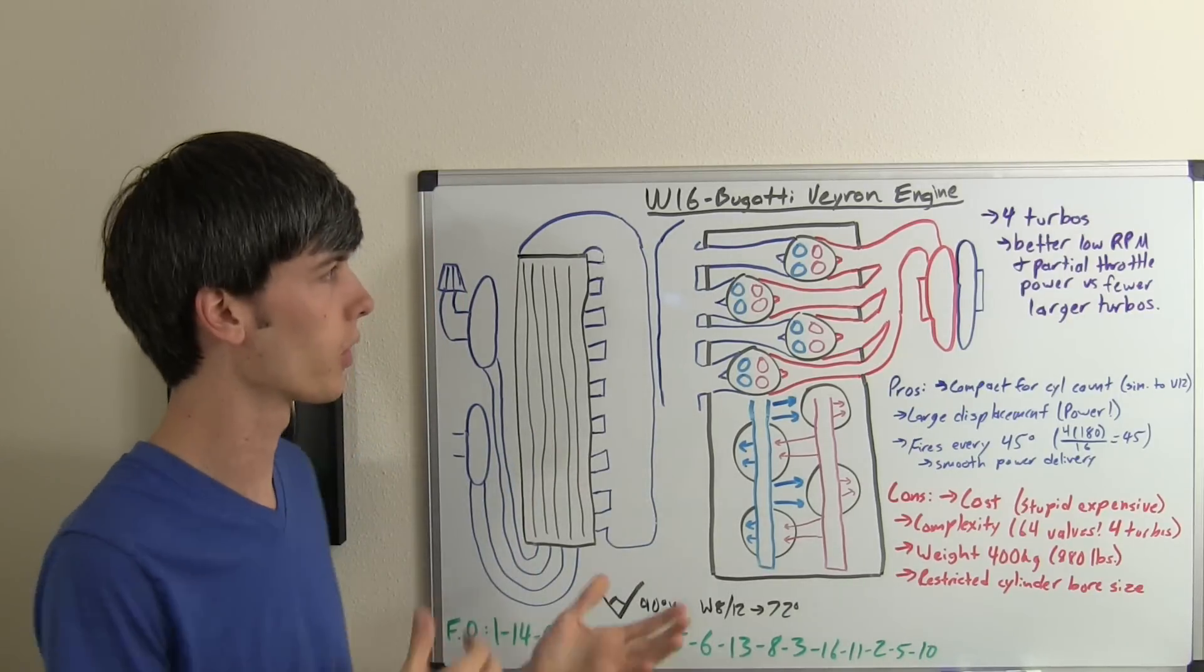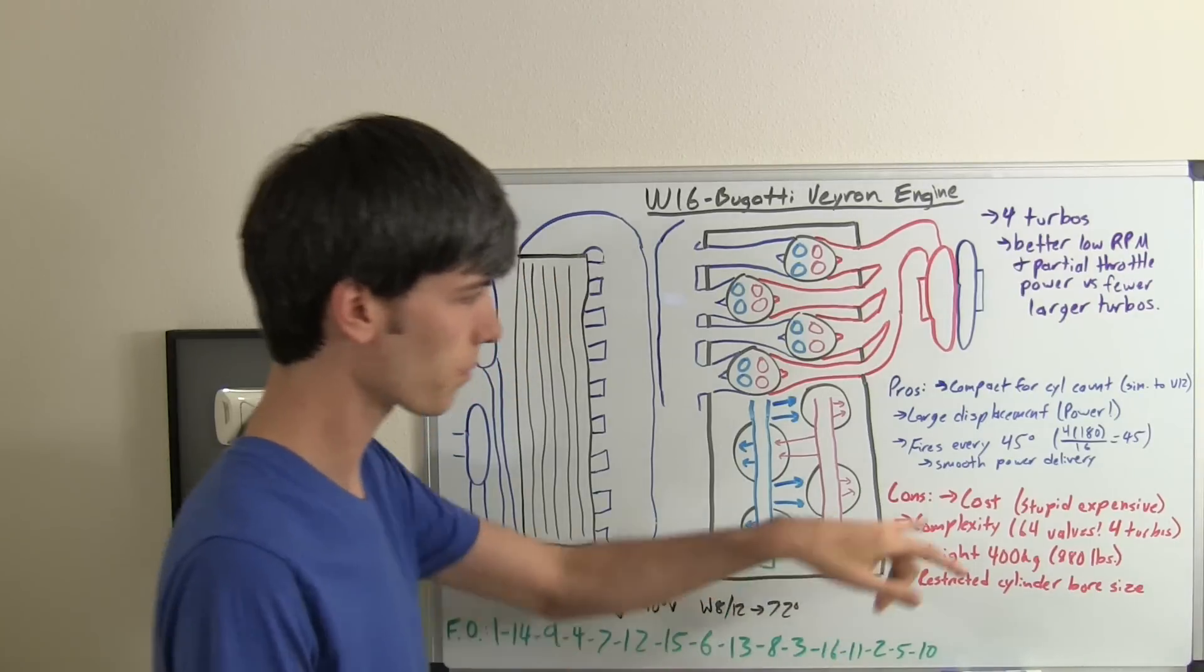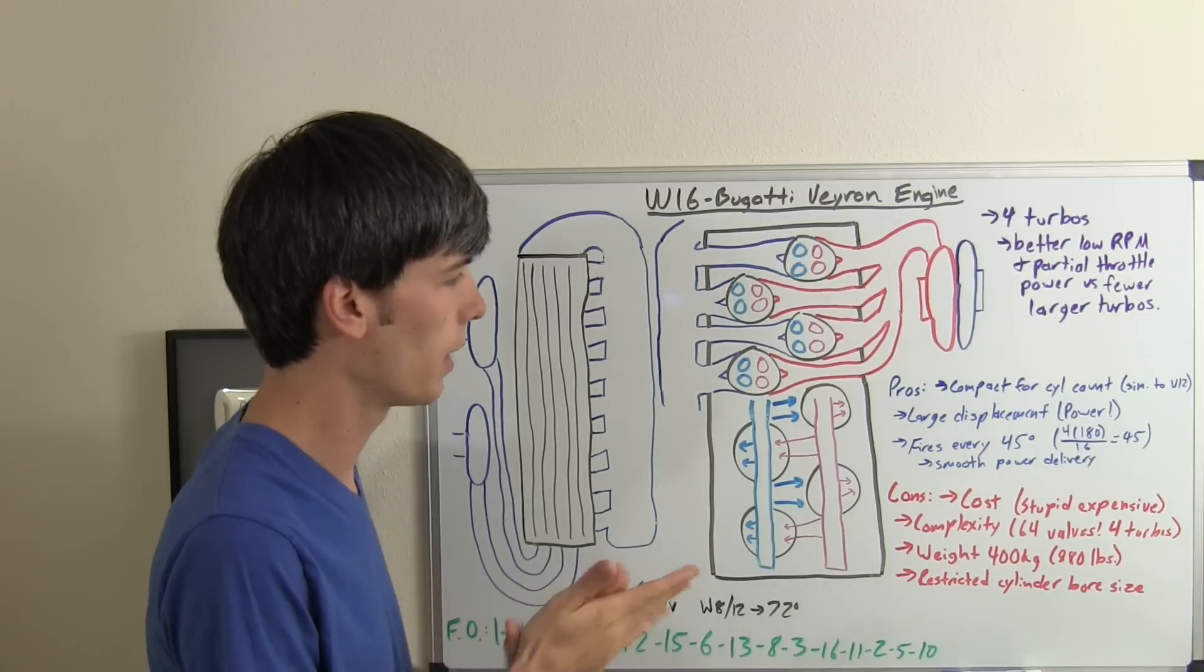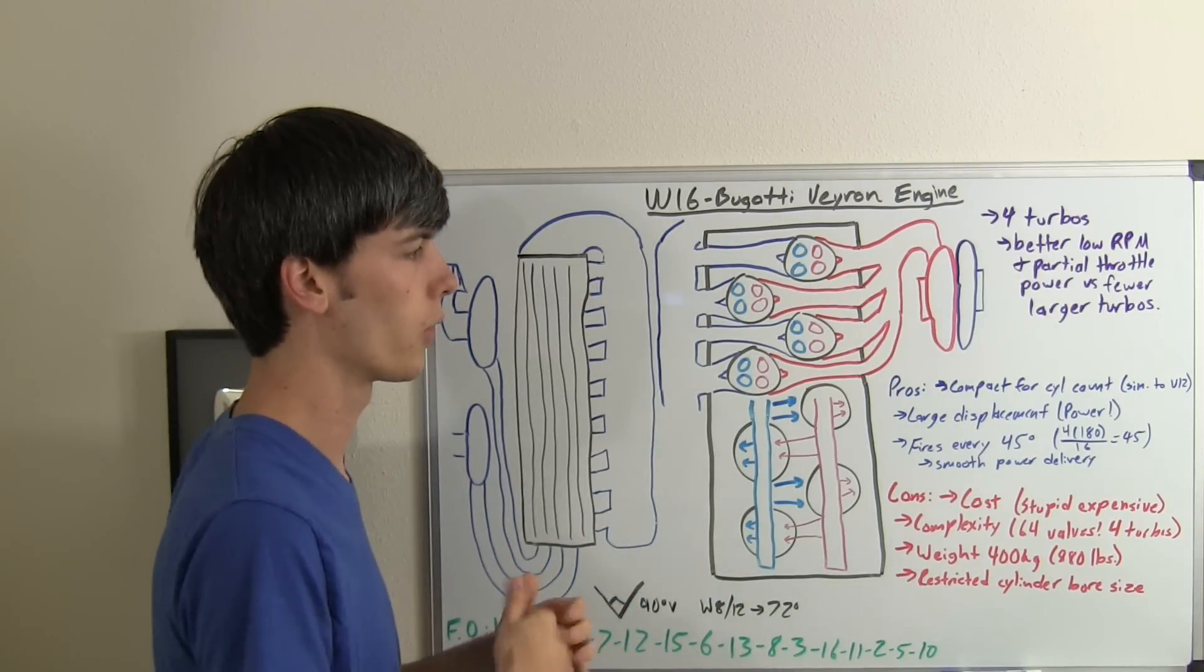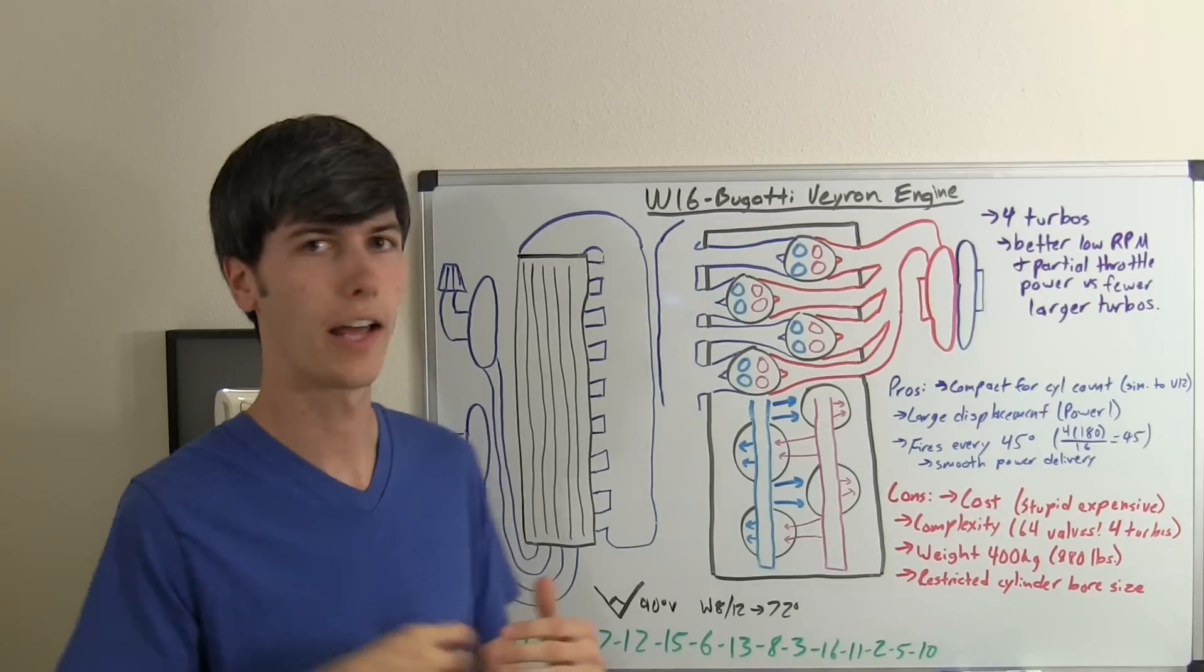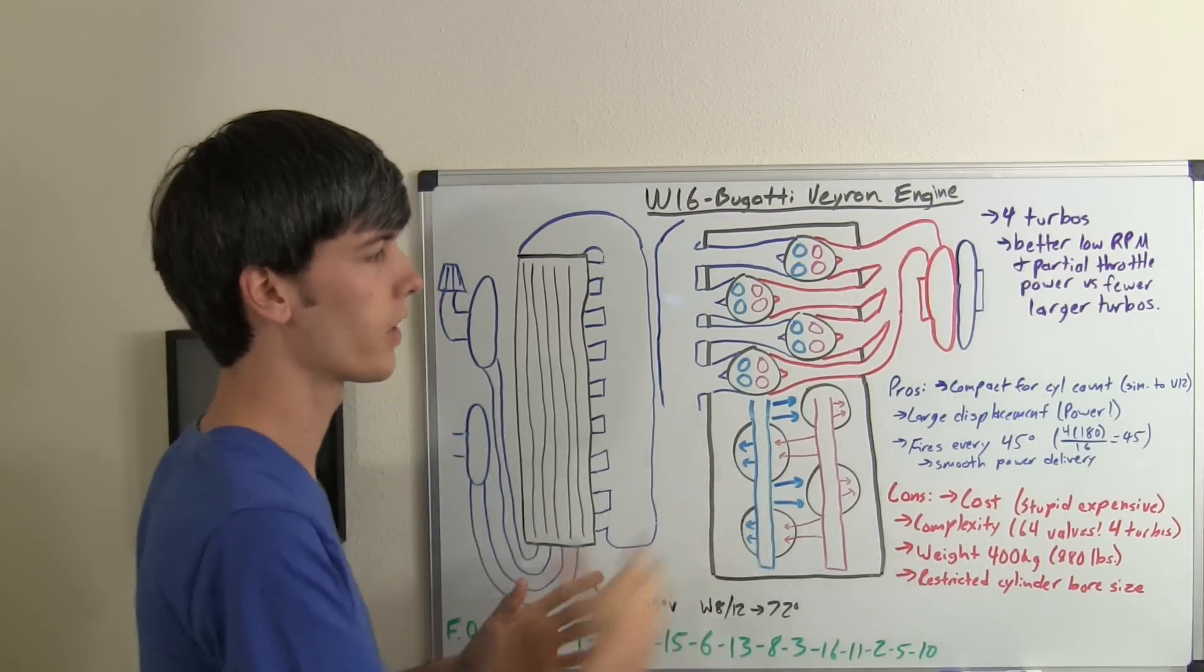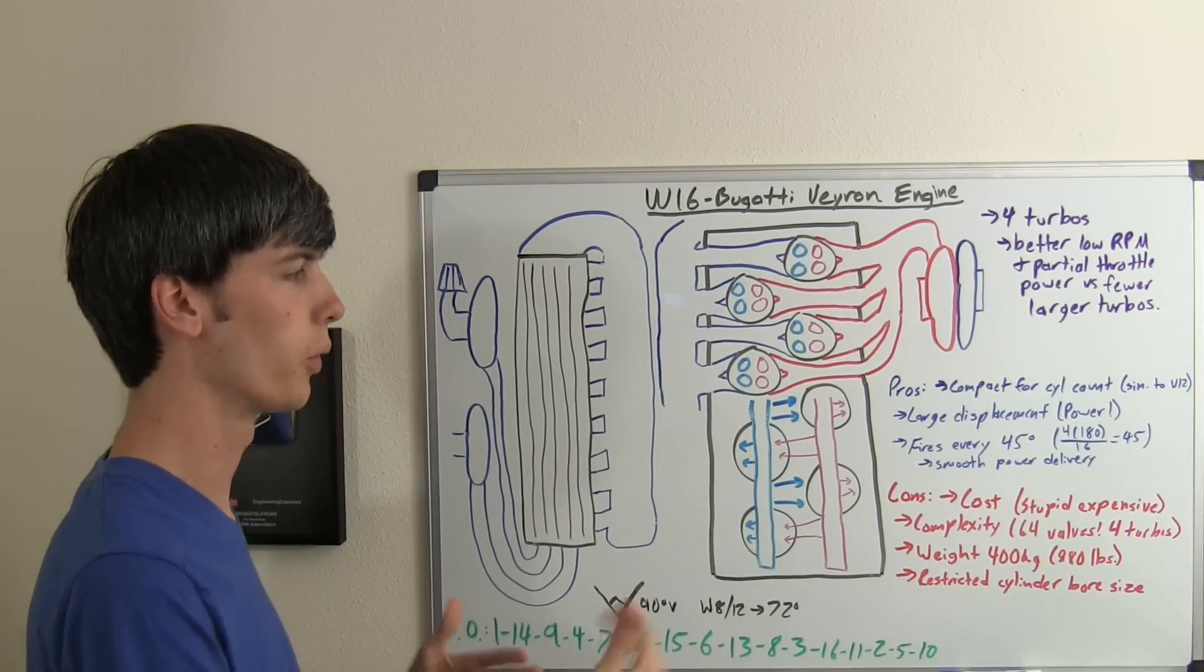This one produces somewhere in the range of 1,000 to 1,200 horsepower, depending on which model. This fires every 45 degrees. Basically this means it's going to have very smooth power delivery. In a four-cylinder engine, you have a power stroke every 180 degrees, so they won't overlap. With this engine, there's a lot of overlap of power strokes and very smooth power delivery.